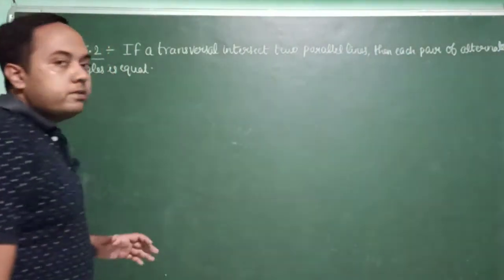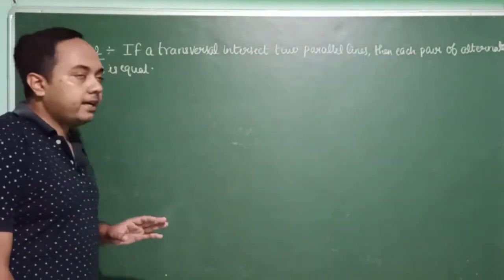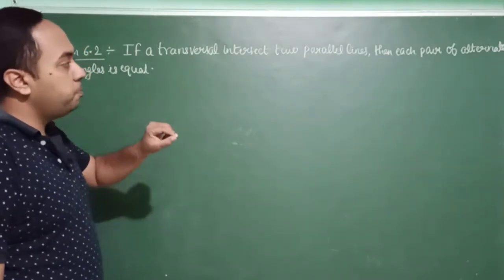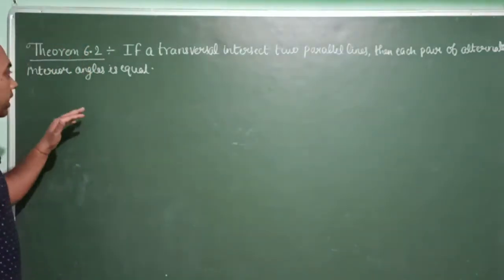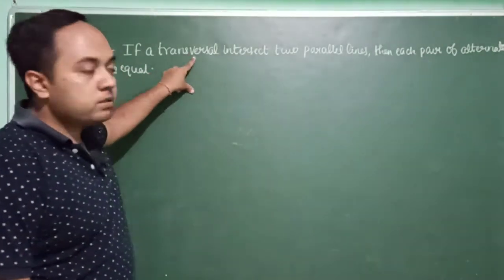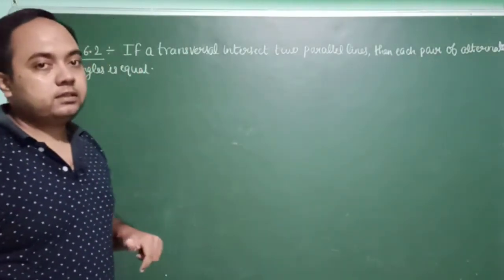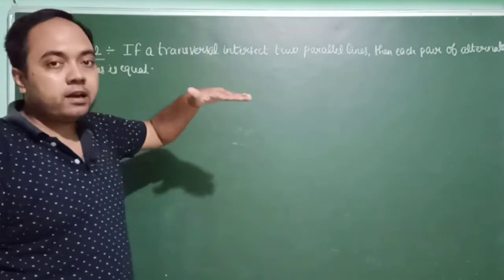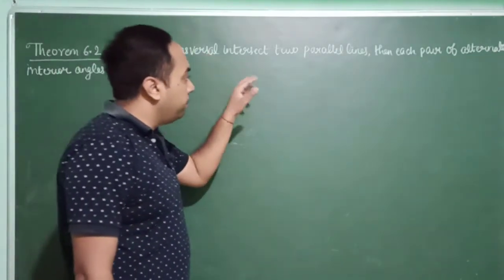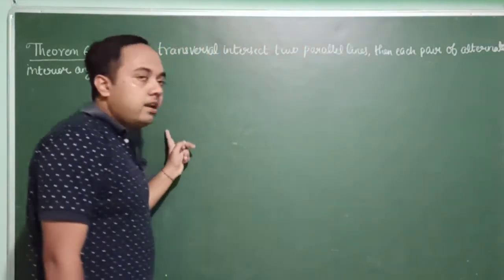Theorem 6.2: If a transversal intersects two parallel lines, then prove that each pair of alternate interior angles is equal. What is given here is that there is a transversal which is intersecting two parallel lines. What we will prove is that each pair of alternate interior angles are equal.